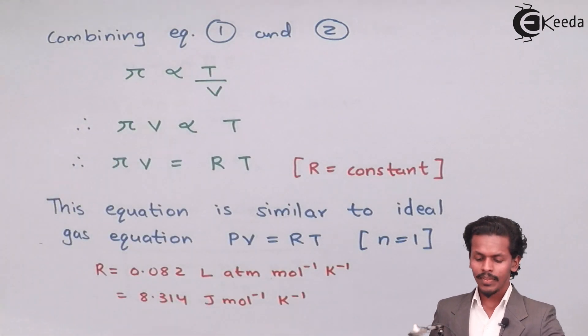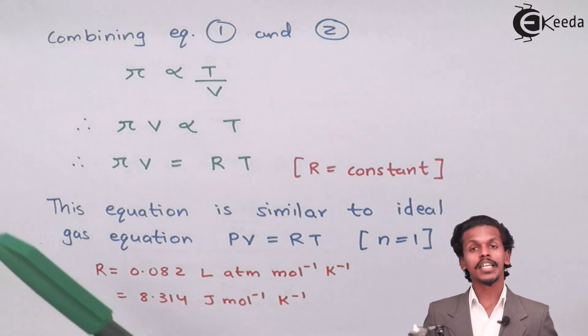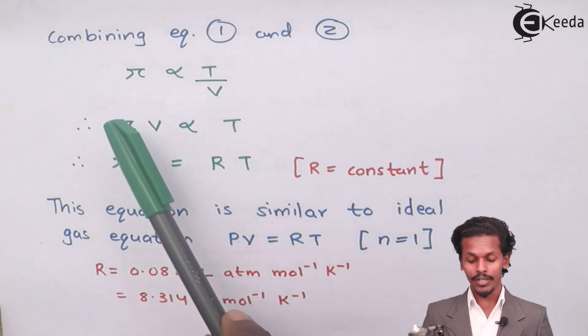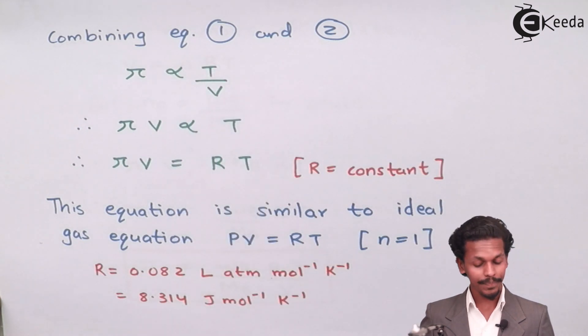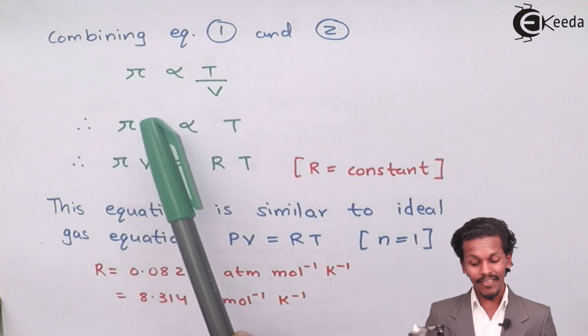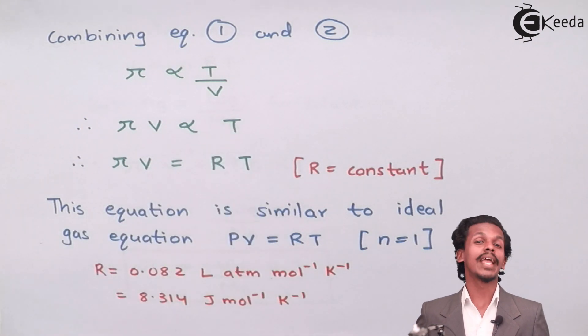Combining equations one and two, we have π is directly proportional to T but inversely proportional to V. Therefore, πV is directly proportional to T.